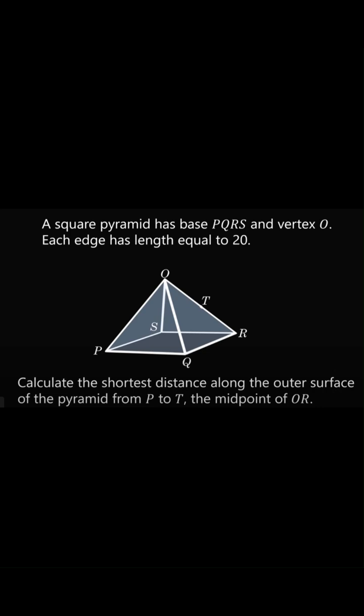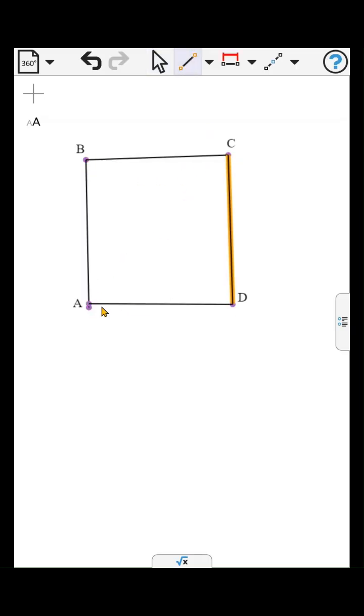We want the shortest path between P and T. Should we go along the base first and then up the side, or avoid the base entirely and traverse two sides? Which do you think?